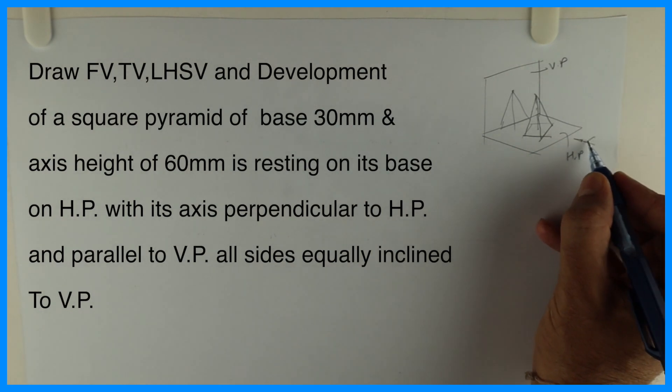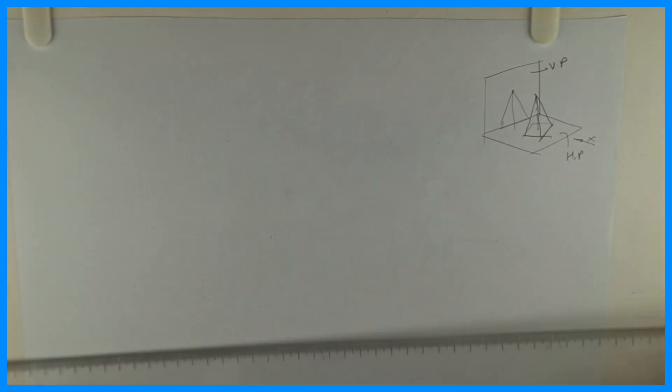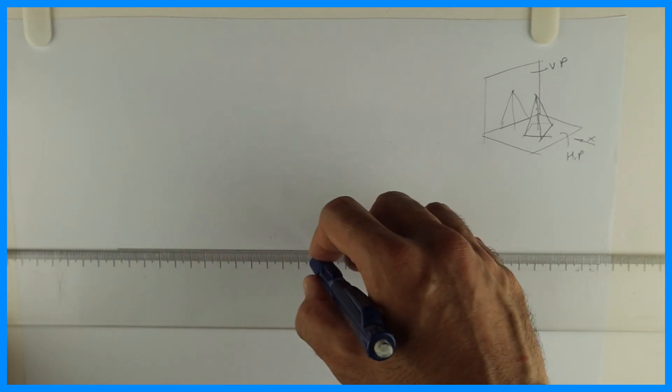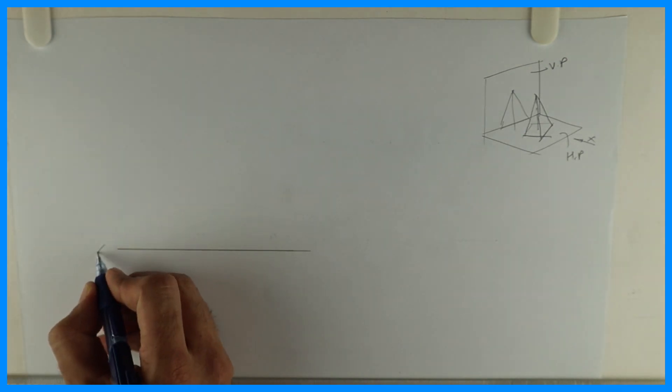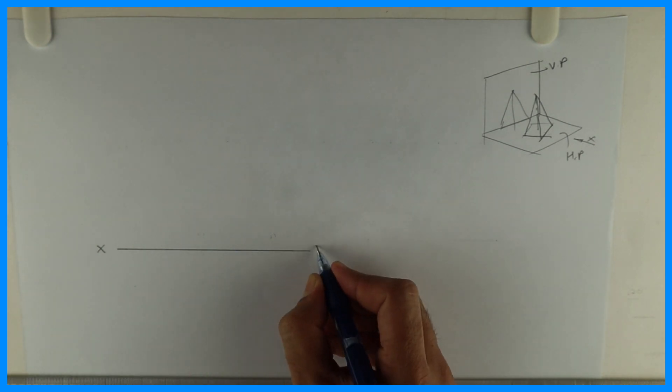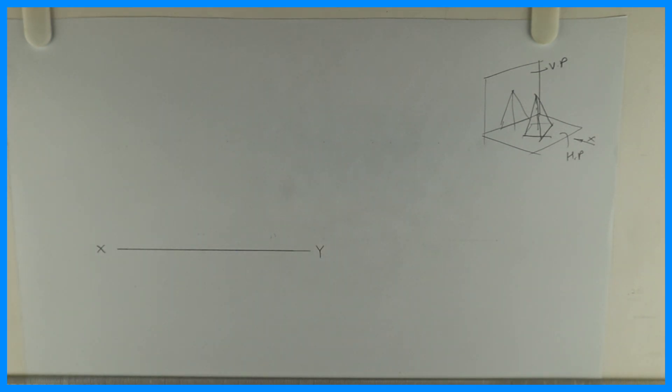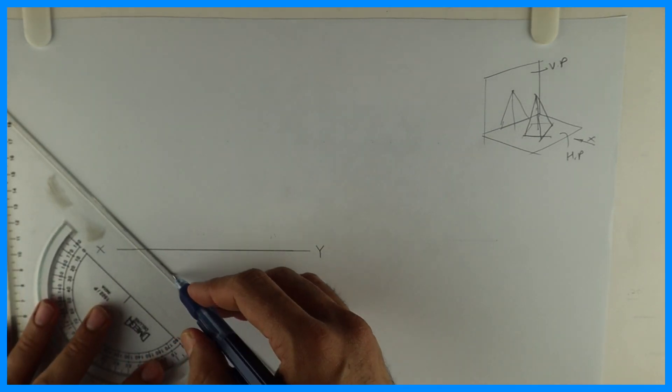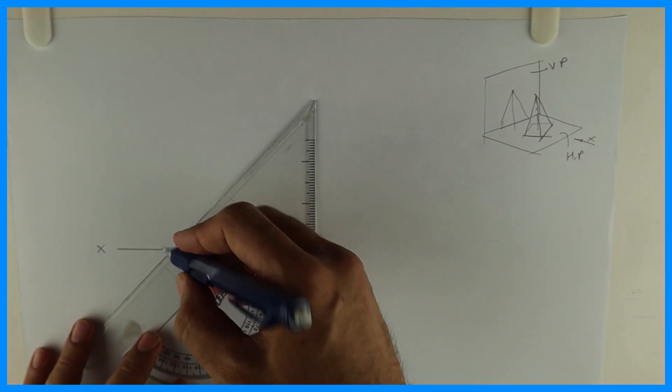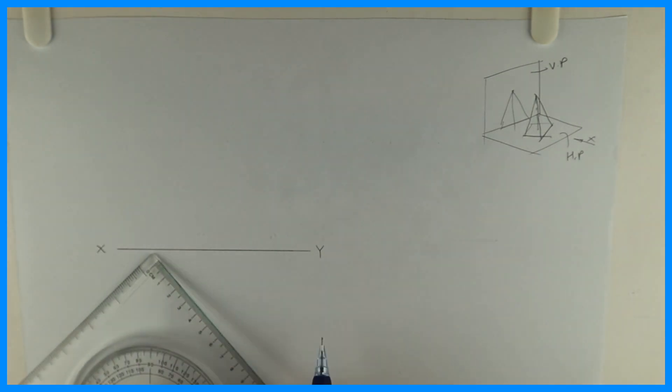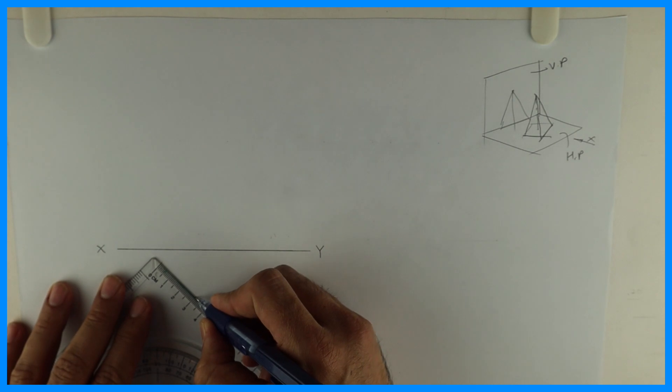So we'll start with top view. Observer is watching it from this side X. This is XY. We'll mark side 30-30 on it.